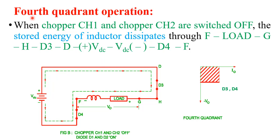Fourth quadrant operation: choppers CH1 and CH2 are switched off, and the inductor releases its energy. When the inductor releases energy its polarity reverses — this terminal becomes negative and the other becomes positive. Current flows through the inductor, load, D3, VDC, and D4, and back to the inductor. The output voltage across the load is negative, but the direction of current is the same as the reference direction, so output current is positive. The device works in the 4th quadrant.